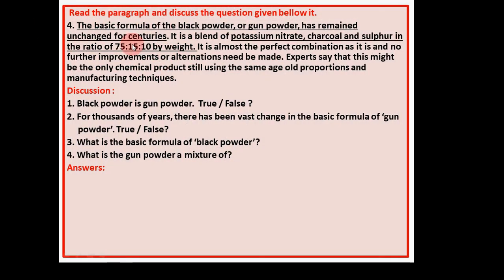Now see, here in the paragraph, in these videos, in particular in this lesson, we have discussed the lessons in different ways. Now let us see. In this paragraph, the basic formula of the black powder or gunpowder has remained unchanged for centuries. It is a blend of potassium nitrate, charcoal, and sulfur in the ratio of 75-15 to 10 by weight. It is almost the perfect combination as it is, and no further improvements or alternations need be made. Experts say that this might be the only chemical product still using the same age-old proportions and manufacturing technique.